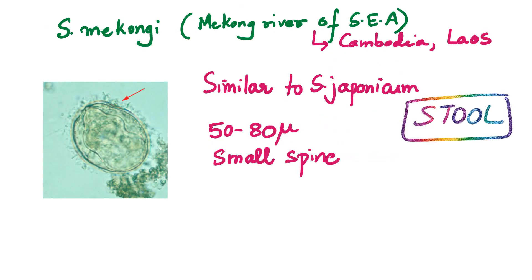Schistosoma mekongi is only reported along the Mekong River in Southeast Asia, mainly from Cambodia and Laos. The eggs are found in stool and are very similar to japonicum — rounded or oval or subspherical, 50 to 80 microns in size — with a small spine. Mekongi and japonicum look almost the same.